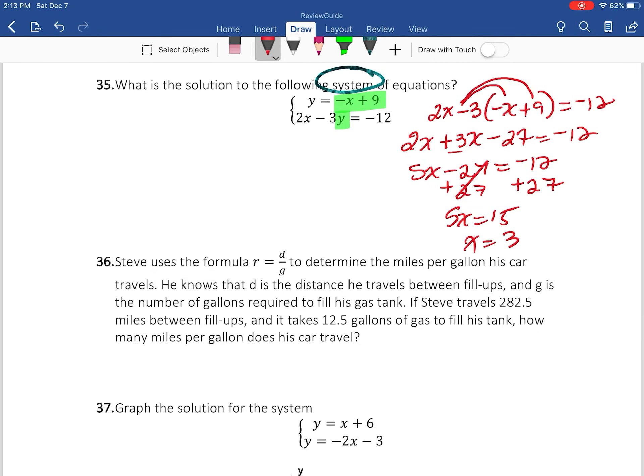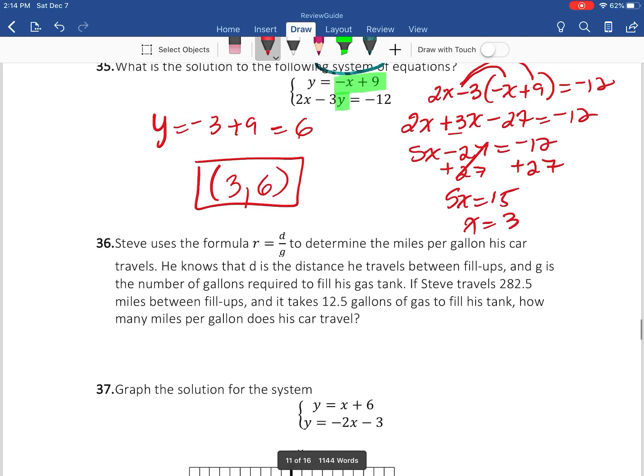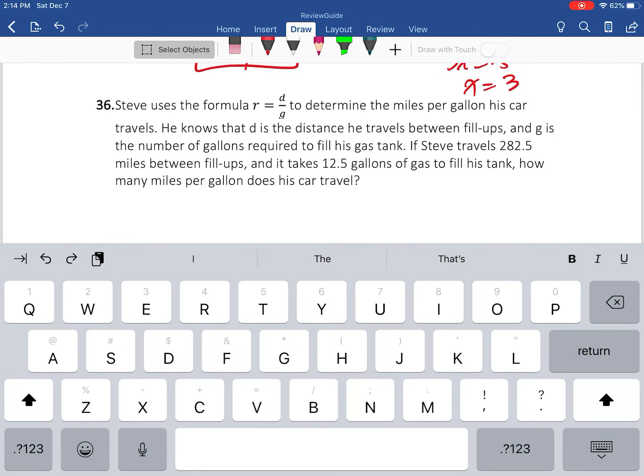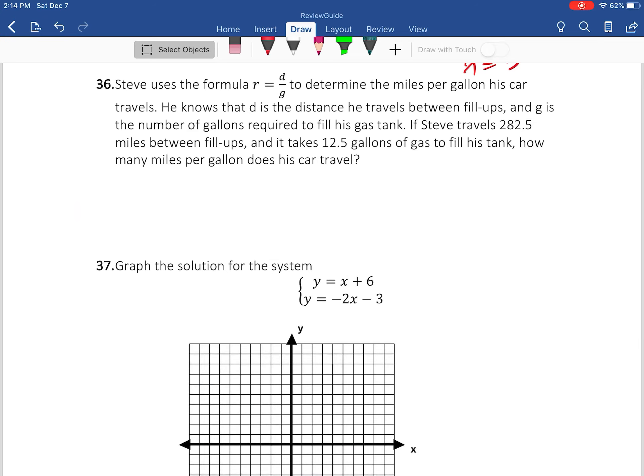Now remember, a solution has an x and a y value. So I need to plug it back in. So I'm going to say y = -3 + 9. -3 + 9 will give me positive 6. So the solution is (3, 6). I will go over this next question in the next... Now, let's do it.